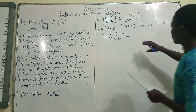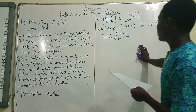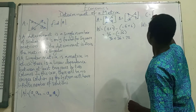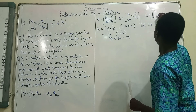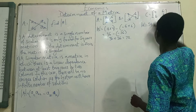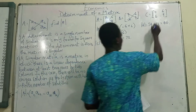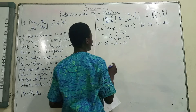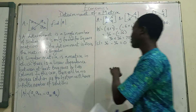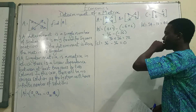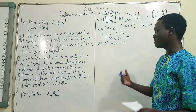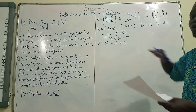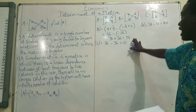Now I want to give an example of a singular matrix. Let's say we have matrix C which is [4, 6; 6, 9]. The determinant of matrix C is 4×9 minus 6×6, which is 36 minus 36 equals zero. So this is an example of a singular matrix. If this were a system of linear equations you're trying to solve, you won't be able to find a unique solution because the determinant is zero.